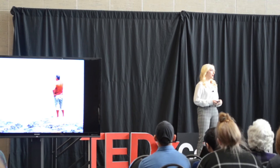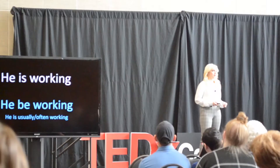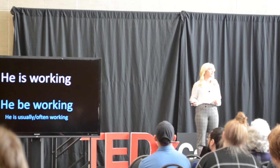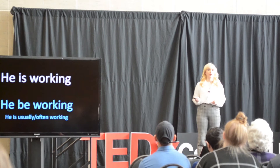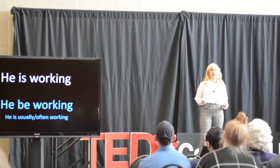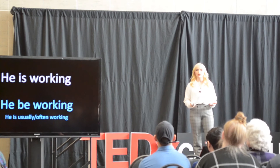Going to North America and the United States — African American English. African American English has been seen as dirty and uneducated since it was created, and people have been trying to tell African Americans how they should be speaking proper English. But no one really talks about how intricate and complex African American language actually is. There's something called the habitual aspect marker, which is the ability to express that something continuously, frequently, or habitually happens. Standard English doesn't have this at all, but it's a feature common in most of the world's languages. Just assuming it's wrong because it sounds different is something we should probably avoid.